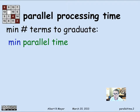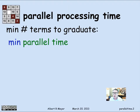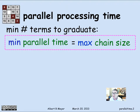We've already worked out some theory of that just from the example. If we look at the minimum number of terms to graduate, this corresponds to the minimum number of stages, or the minimum amount of time it takes to process a bunch of tasks, assuming that you can do tasks in parallel — as many in parallel as you need — with no limit on the amount of parallelism allowed. In that case, the minimum parallel time for a bunch of constrained tasks is simply the maximum chain size in the constraint graph.